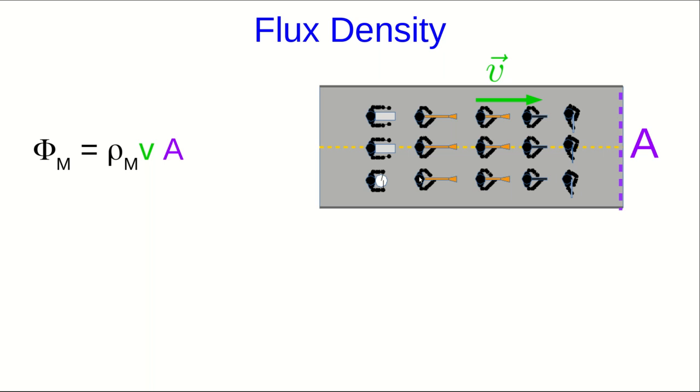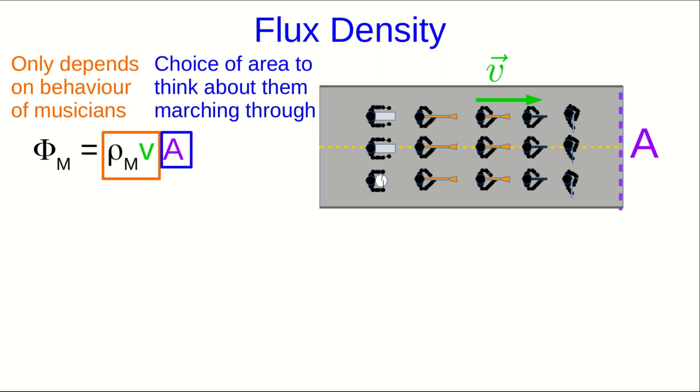We can see how to get an area proportionality in heat flux by thinking about the musician flux for a moment. Notice that there's this first part of the relationship that only depends on variables that are describing behavior of the musicians, and then that's multiplied by the area that they're marching through. So it's often useful to condense all the parts that depend on the behavior of the musicians into a single variable that you would call the musician flux density because it is a number of musicians per unit time per unit area. It's flux per unit area.